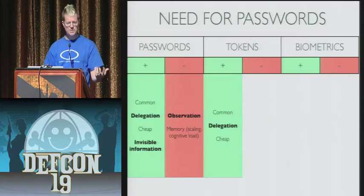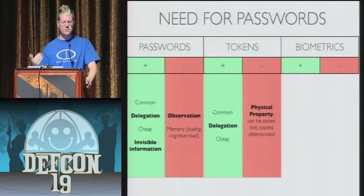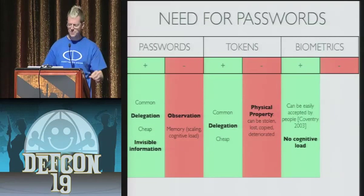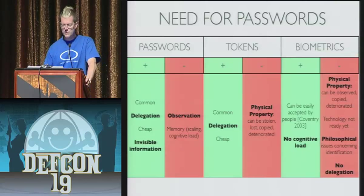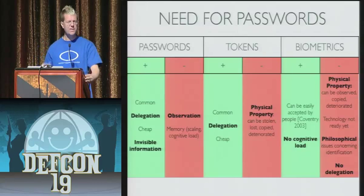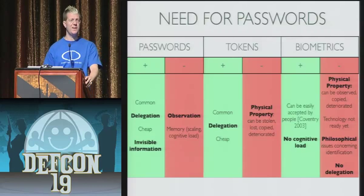Tokens are also cheap and commonly available, and you can delegate them, but they are physical things — they can be stolen, copied, lost, or deteriorate. Biometrics have no cognitive load at all, and non-security people especially are into them. But they're also a physical property — they can be copied, they're unique but not secret. People can record your fingerprints or whatever you're using as a biometric. They deteriorate and change as you get older. Also, many people have severe philosophical issues against them, and you can't delegate them — you can't give your finger to someone to log in.